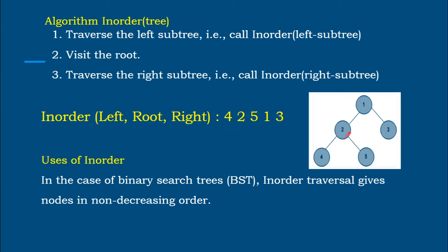In-order means left, root, right. Starting at node 1, we go left, keep going left until there is no more left — that is node 4, which is visited first. Then we go up to its root, node 2, which is visited next. Then we go right to node 5. So far the order is 4, 2, 5. That subtree is complete, so we go back to the root, node 1, and then visit the right child, node 3. The final in-order result is 4, 2, 5, 1, 3.